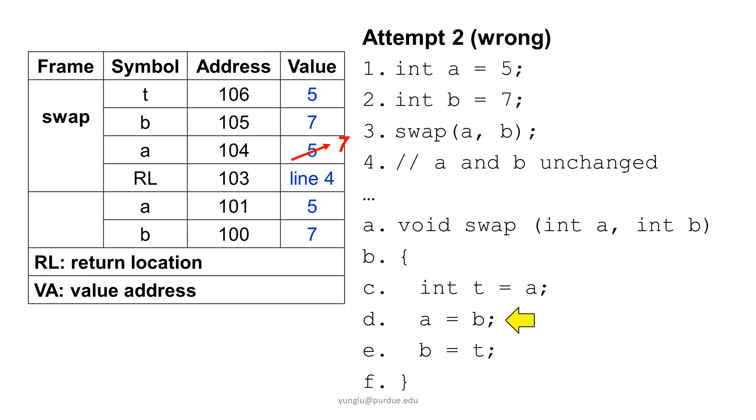The next line assigns t's value to b, so b's value becomes 5. This is what the stack memory looks like before the function finishes and the program goes to line 4. When the swap function finishes and the program goes to line 4, the top frame of the stack memory is popped. Do you notice that a and b are unchanged?